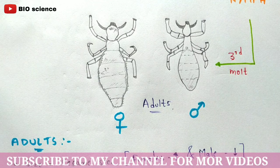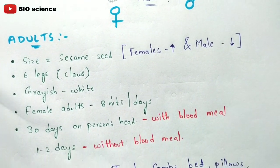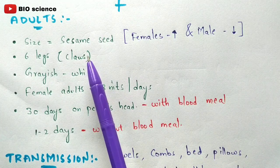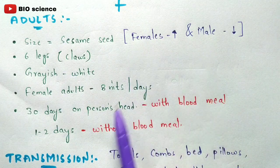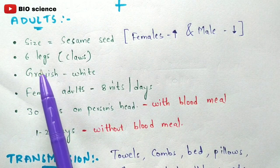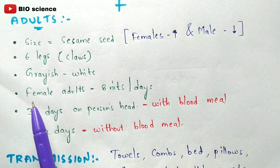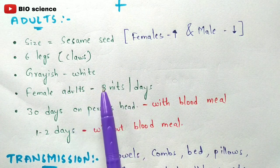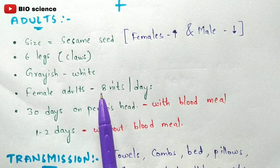Coming to the structure of adults: the size resembles a sesame seed. The female is bigger than the male. Adult individuals contain six legs and are grayish-white in color. The female adult individual lays eight eggs (nids) per day.